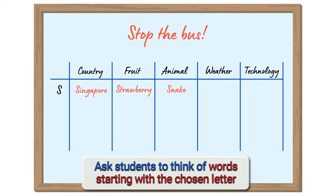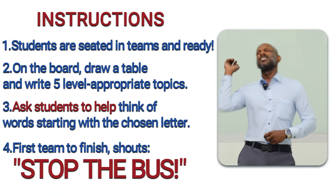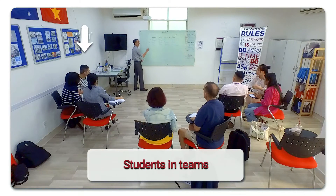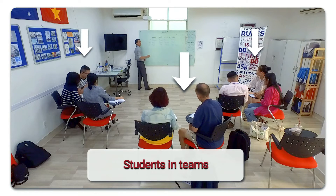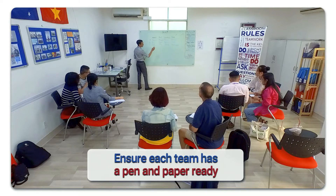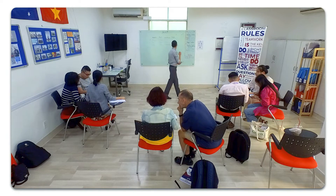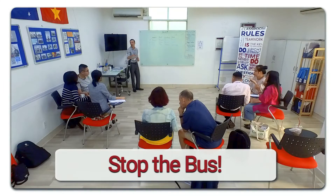Let them know that in teams they must do the same for all five topics. Then once done, they must shout 'Stop the Bus!' Let's see it in action. Get your students moved around the room, each in small teams. Grab each team a pen and paper and go! They must now brainstorm words for each of those topics. Once a group has written down their five words relating to the topic and the letter chosen, they will shout 'Stop the Bus!'